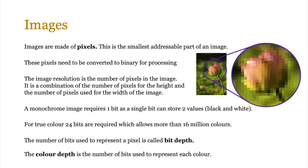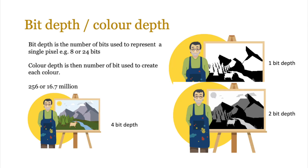A monochrome (black and white) image requires 1 bit per pixel, since a single bit can store 2 values. For true color, 24 bits are required, allowing more than 16 million colors. The number of bits used to represent a pixel is called bit depth. Color depth is the number of bits used to represent each color — for the exam, these terms are used interchangeably. For example, 8-bit color gives you 256 colors, while 24-bit gives you 16.7 million colors.